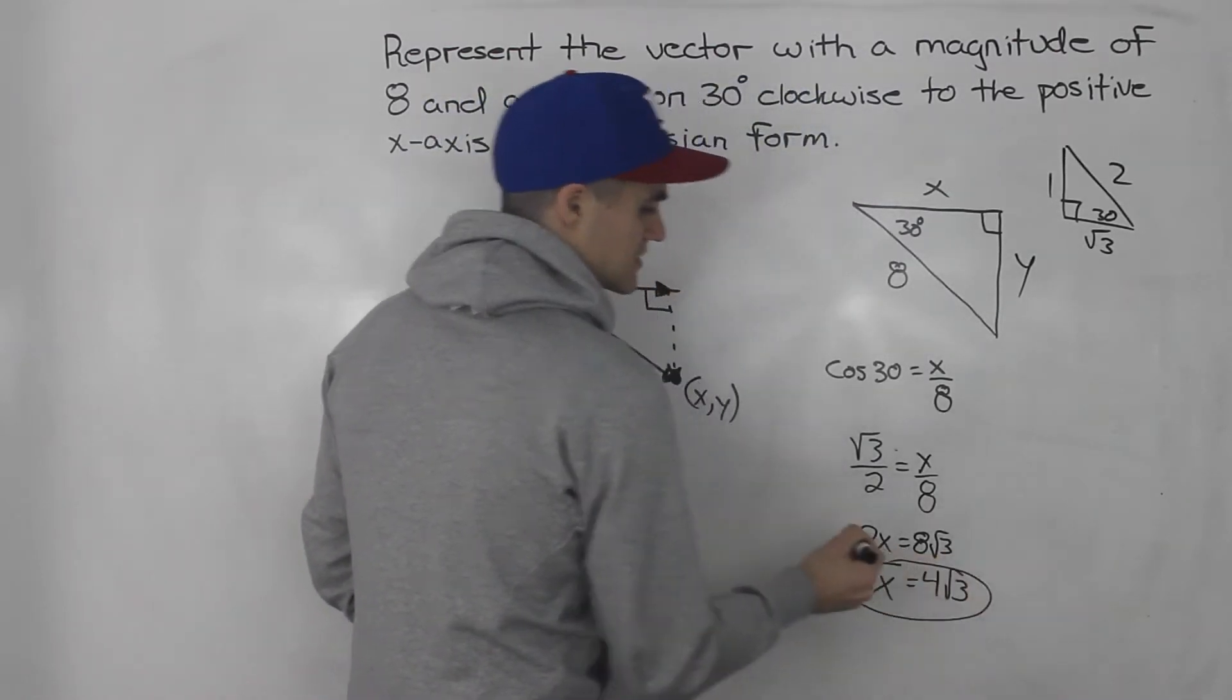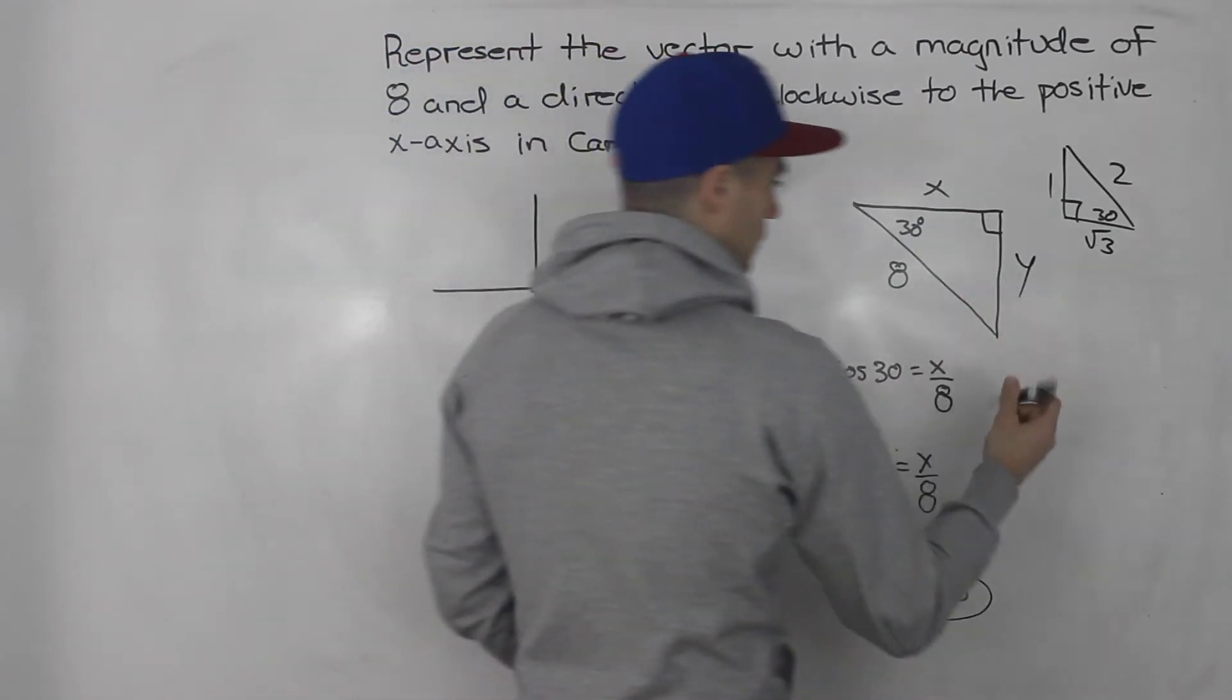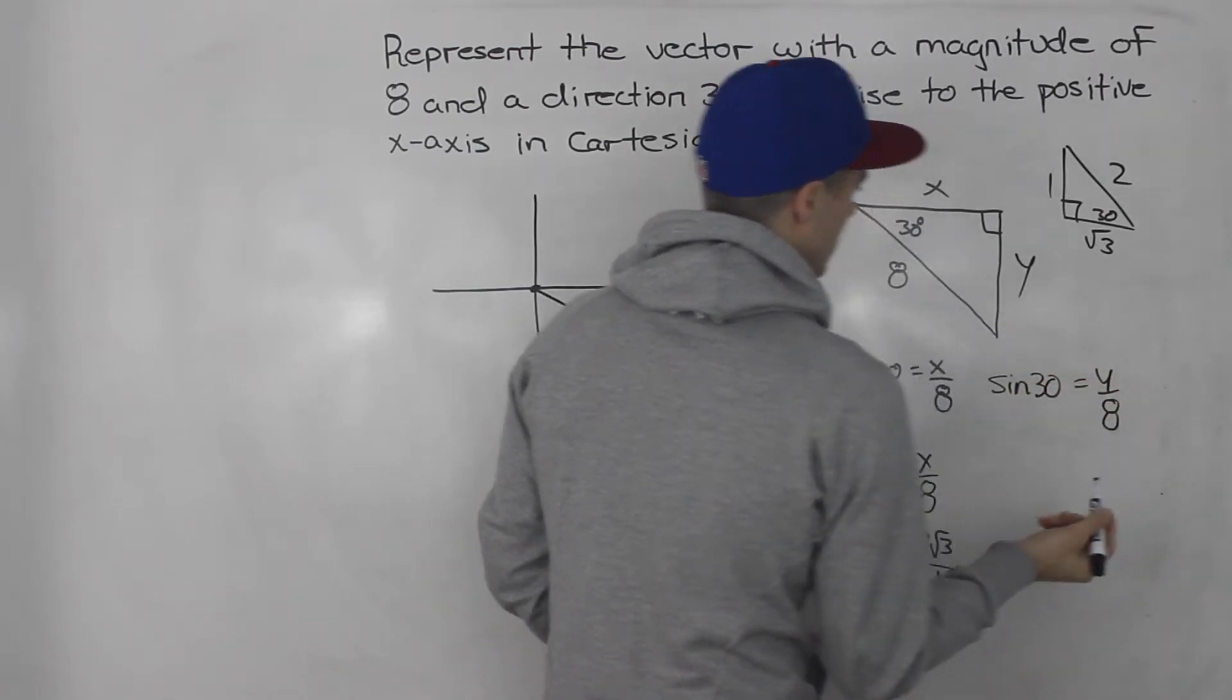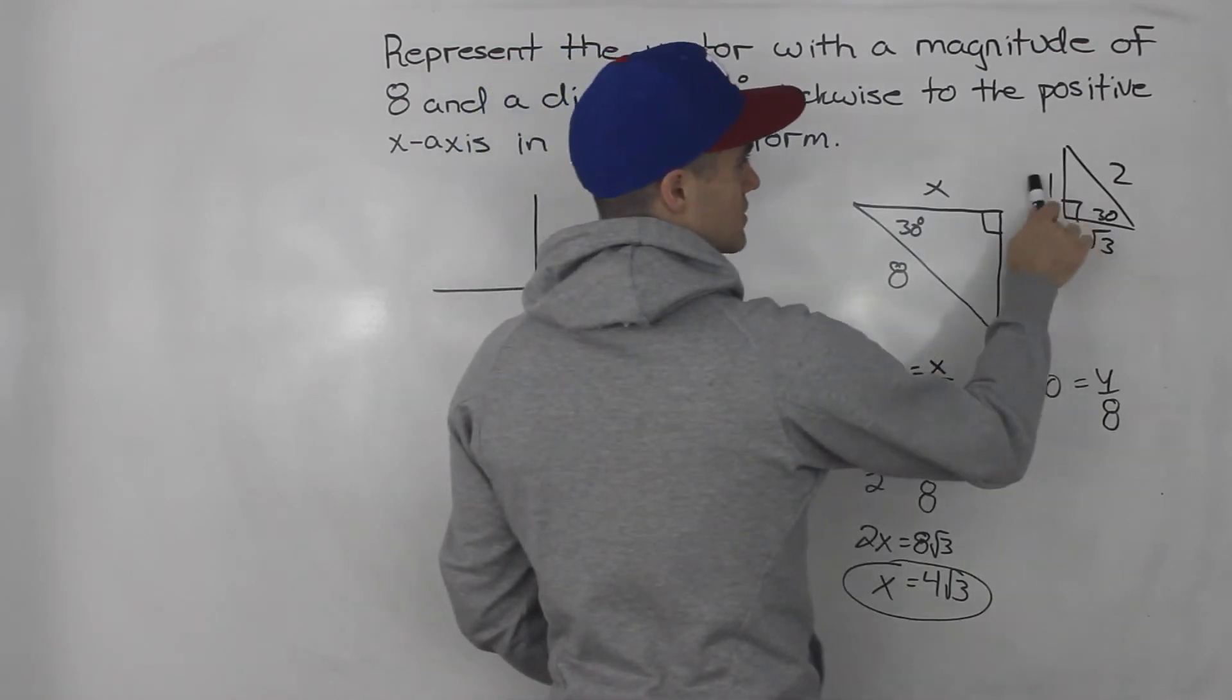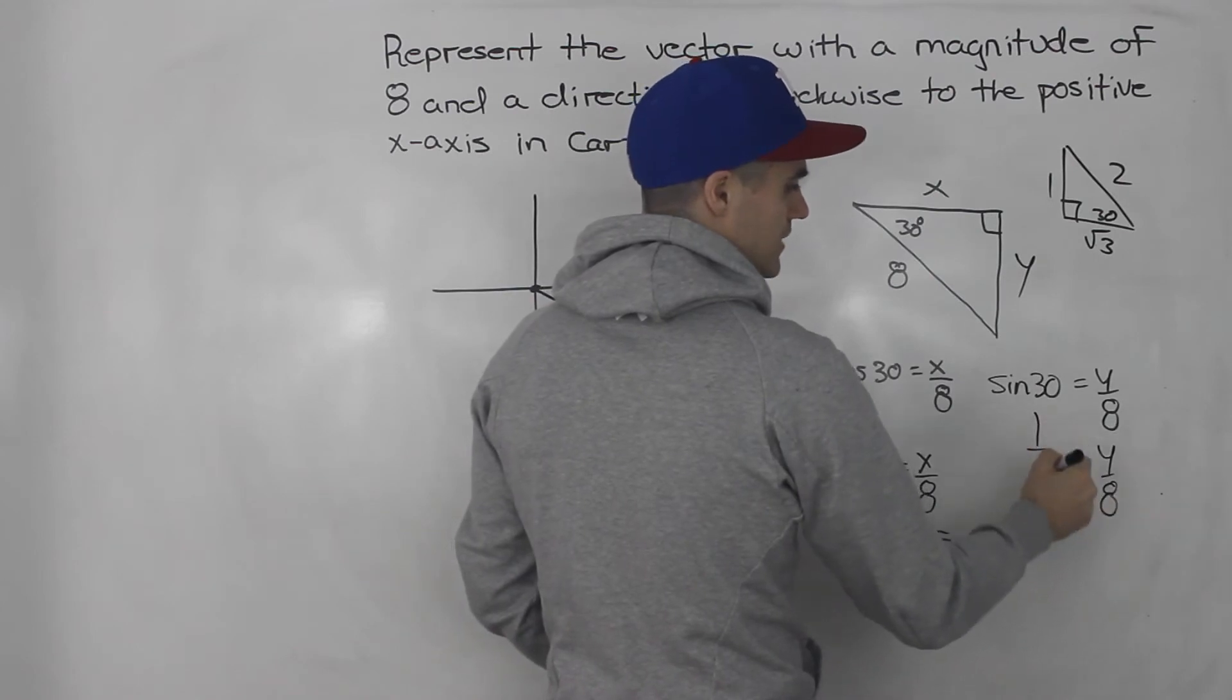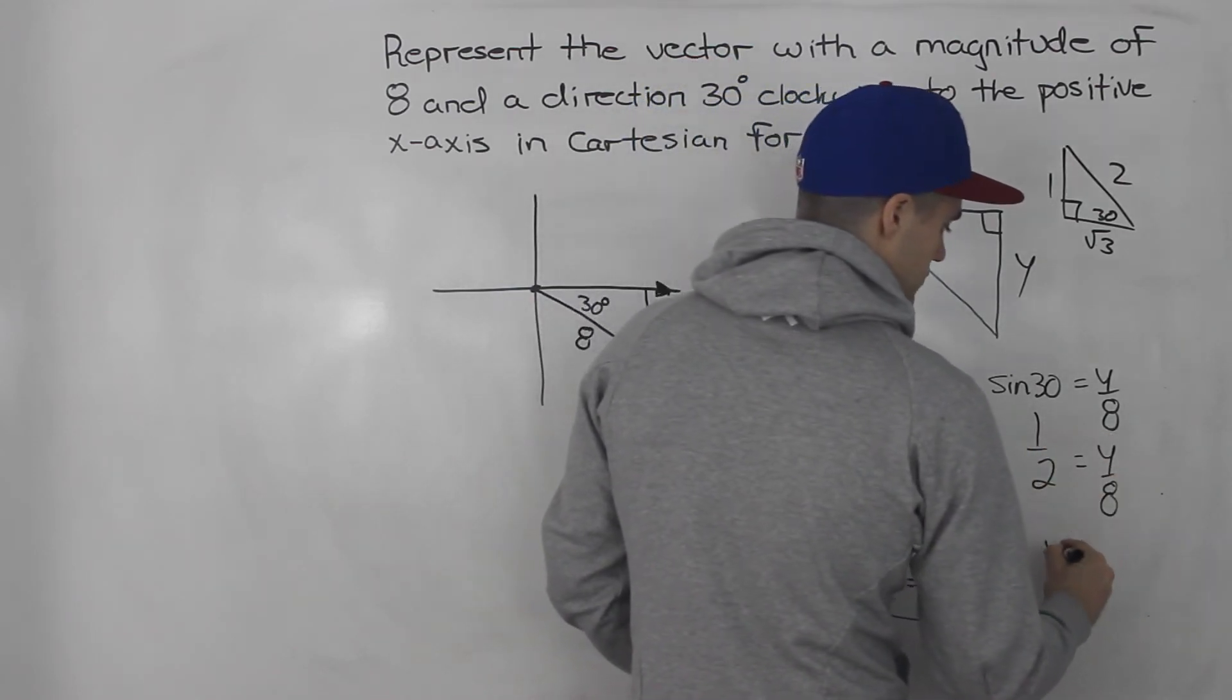What about the y value? Well, the y value, we would use sine. So we go sine of 30 equals y over 8, right? Opposite over hypotenuse. And we know sine of 30 is 1 over 2. So when we cross multiply and solve for y, we'd have 8 equals 2y. Divide both sides by 2. So y would be 4.